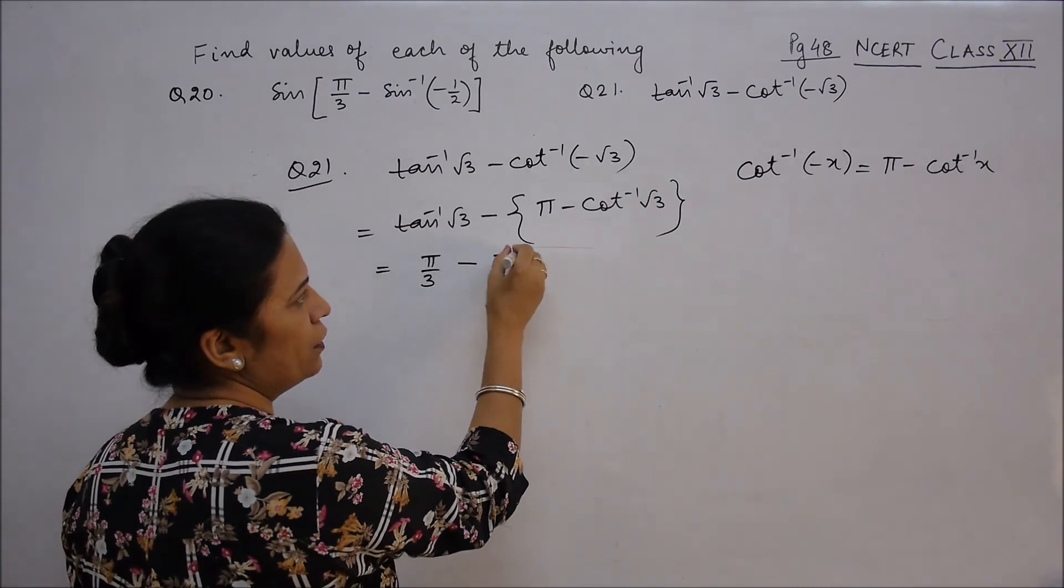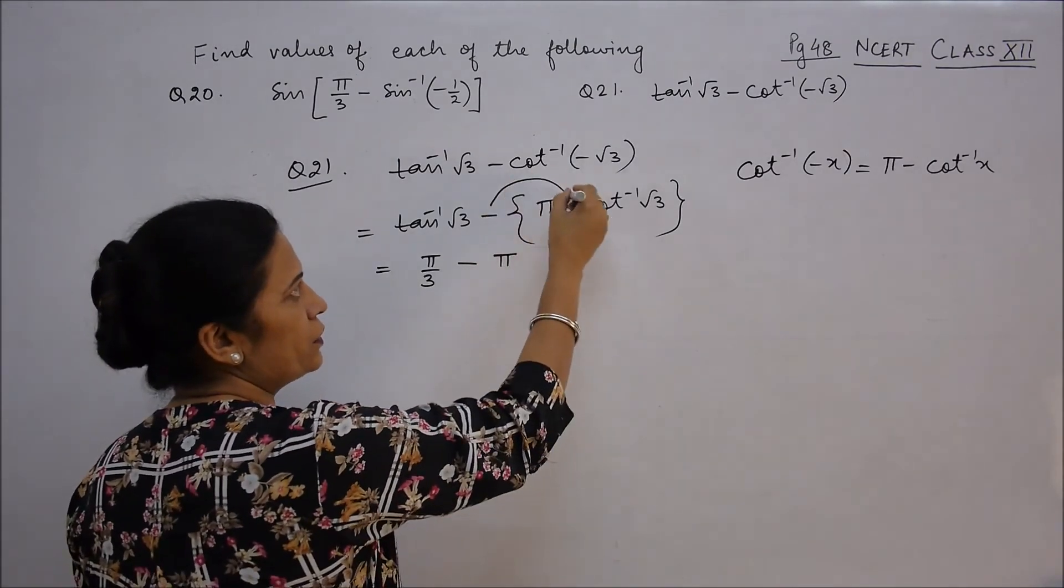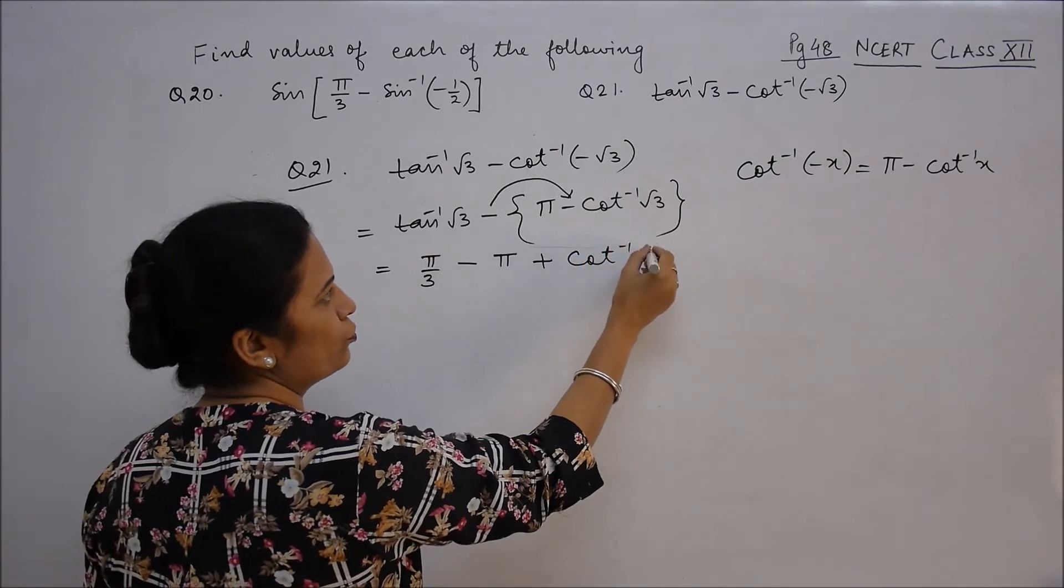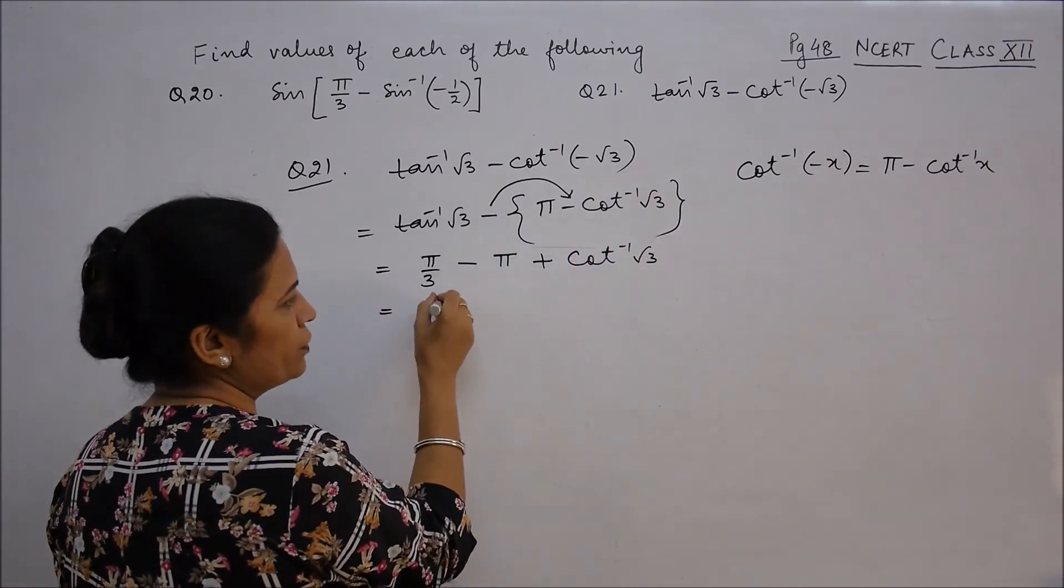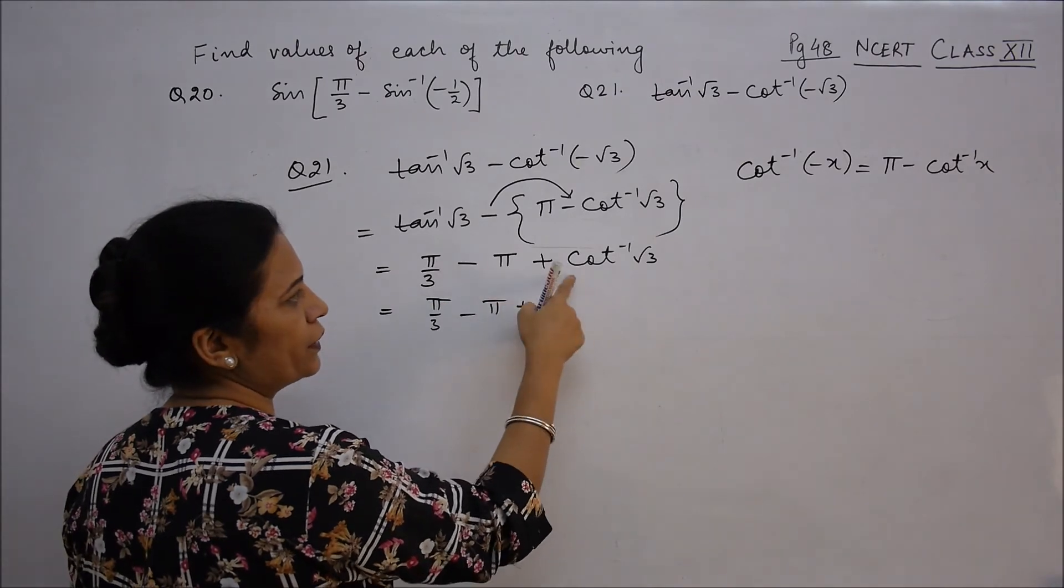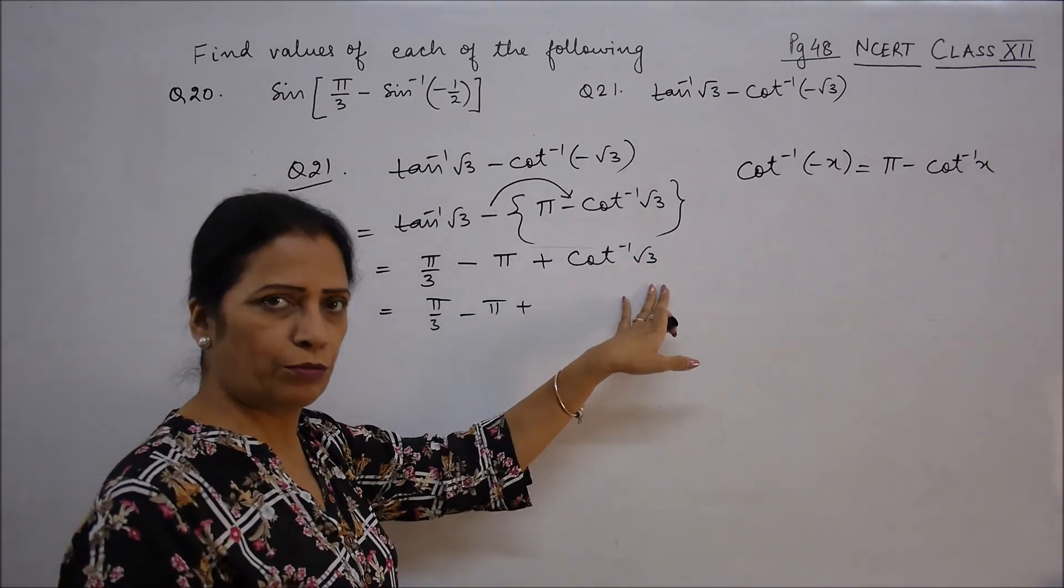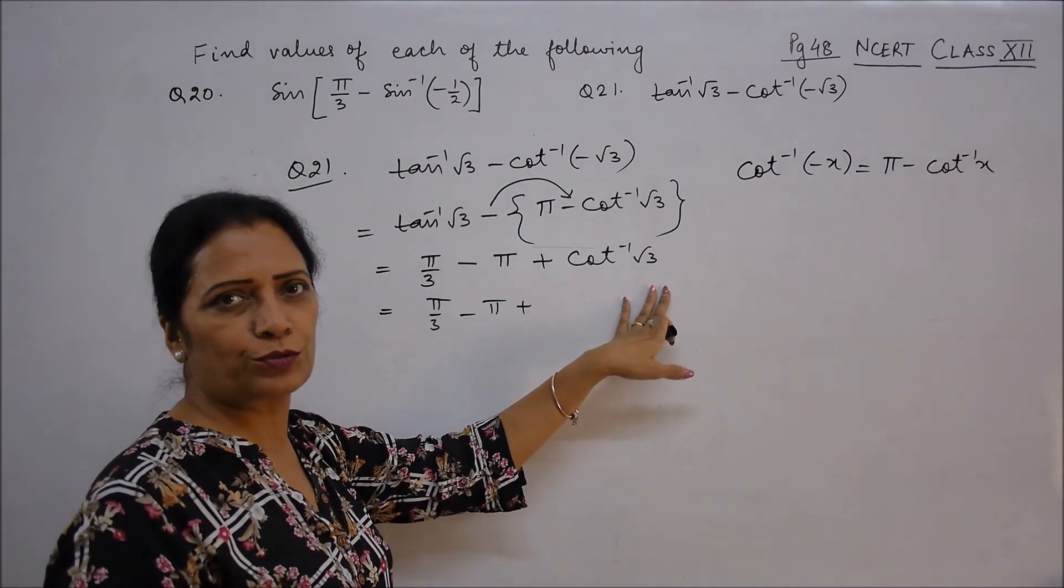So it is π/3 minus. Opening the bracket, minus π plus cot inverse √3. This becomes π/3 minus π. If there's a negative here, it becomes plus. Cot ki value √3 kab hoti hai? It is at π/6.